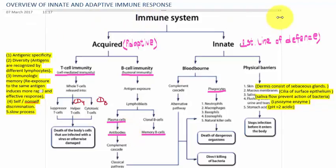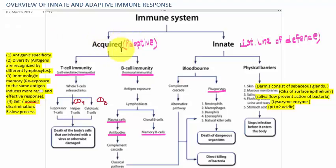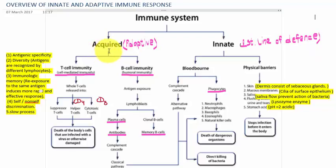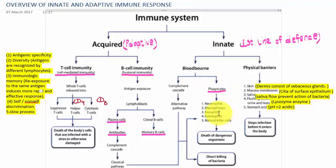Let's discuss the differences between innate and acquired immune systems. Acquired immunity is very specific to an antigen, whereas innate immunity is a non-specific process. The major cells involved in acquired immunity are T cells, B cells, and antigen-presenting cells. In innate immunity, the major cell types are phagocytes — monocytes, macrophages, neutrophils, natural killer cells, and dendritic cells.